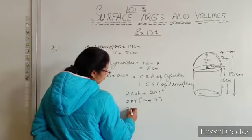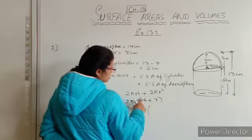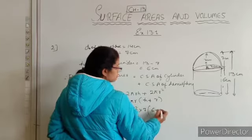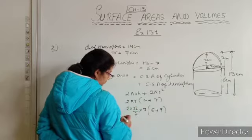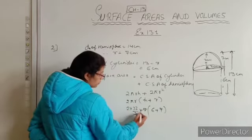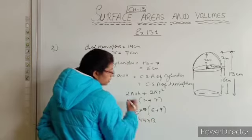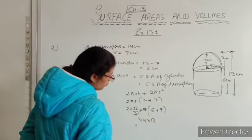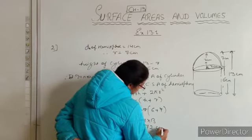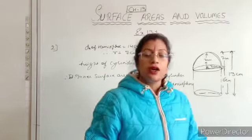So: 2 × (22/7) × 7 × (6 + 7). The 7s cancel, giving 44 × 13 = 572 cm². So 572 cm² is the answer for the second question. Now we will start the third question.